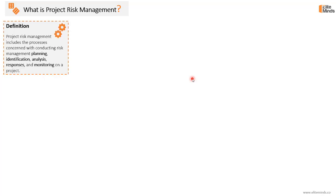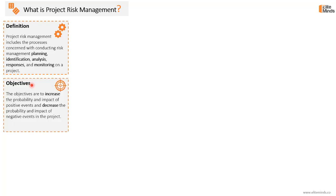Starting with the definition — what is project risk management? It includes all the processes and activities concerned with conducting risk management, starting with planning for risk management, identification of the project risks, analysis of the identified risks, planning responses, and then monitoring the implementation of those responses and monitoring the risks on the project. All these activities from the moment you start planning for risk management till you close the project risks are part of project risk management.